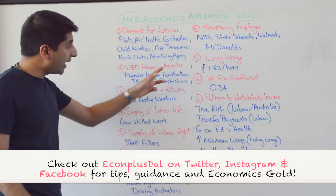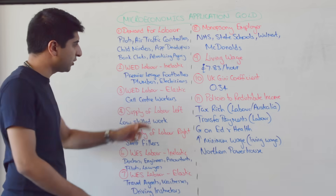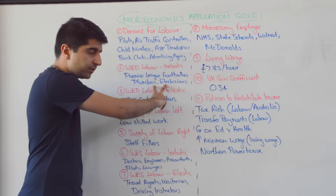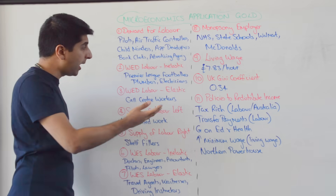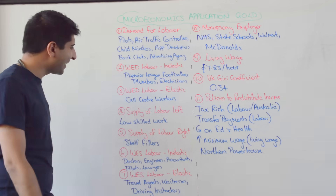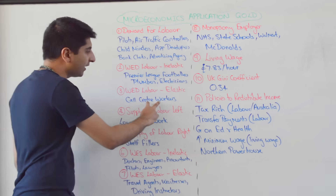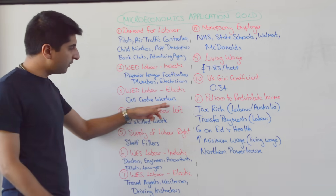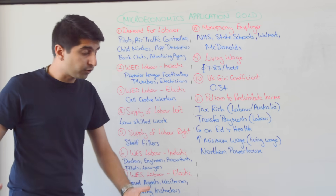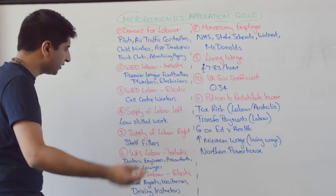Demand for labour wage inelastic: Premier League footballers, plumbers, and electricians — these workers are very hard to substitute with capital, so even if wages have been driven up, you won't see a big fall in employment. Whereas demand for labour wage elastic: call centre workers, because wages are a big percentage of total costs and they can be easily substituted with capital and technology.